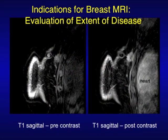Here's her MR showing — this is a sagittal plane, meaning you're looking at the patient sideways on her breast. And these are the ribs on end here. This is part of the heart. This is before contrast injection — that's the mass. That's a little vitamin E capsule we put on there, similar to the BB marker.